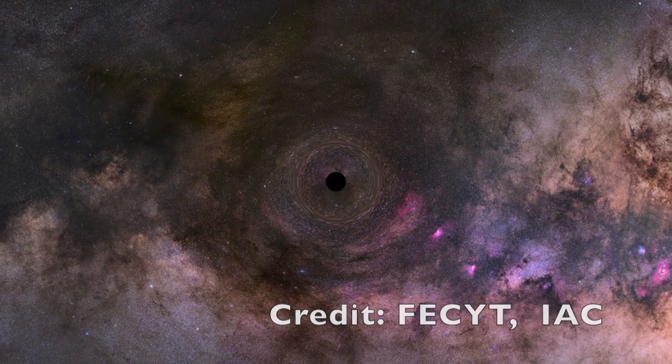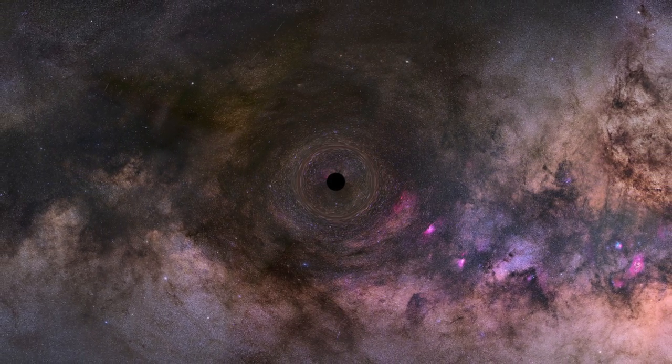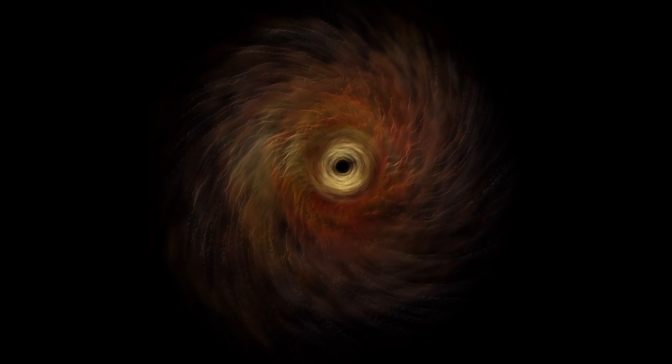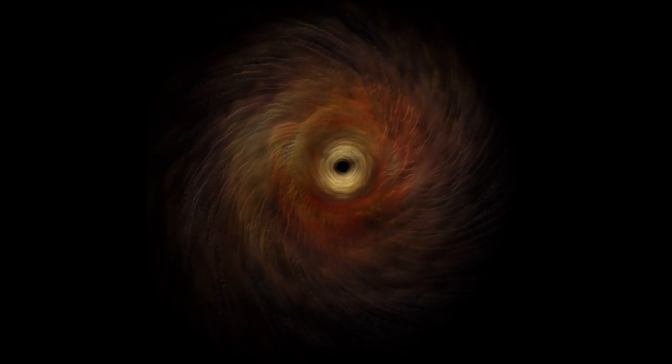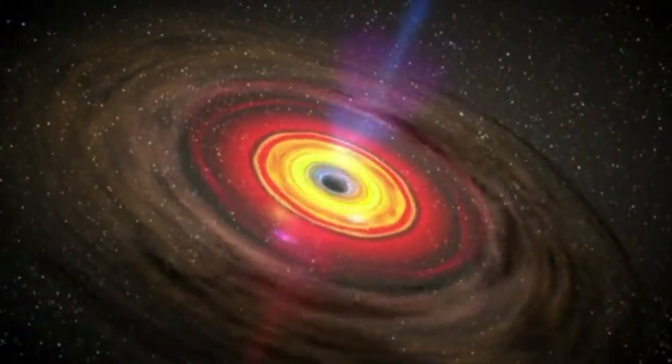But no matter the circumstances of black holes, they all share one characteristic: an event horizon from which no light or information can escape. This means that the singularity at the center of the black hole cannot ever be seen, except in one hypothetical instance that, if we ever saw it, could fundamentally revolutionize our understanding of the universe.